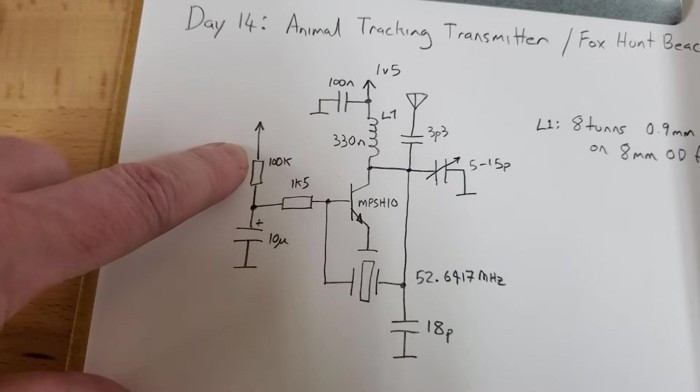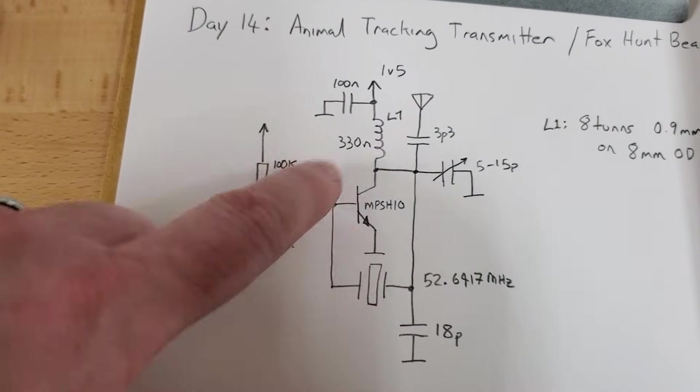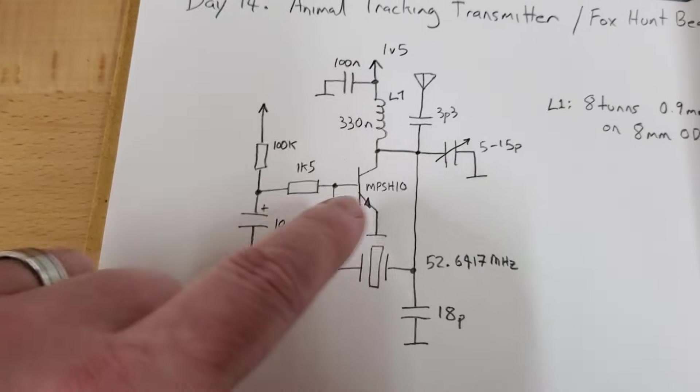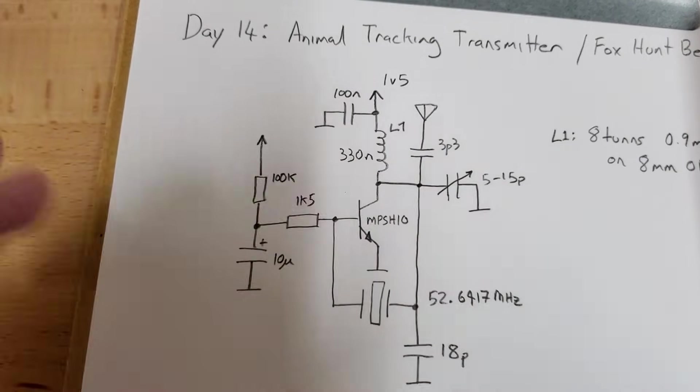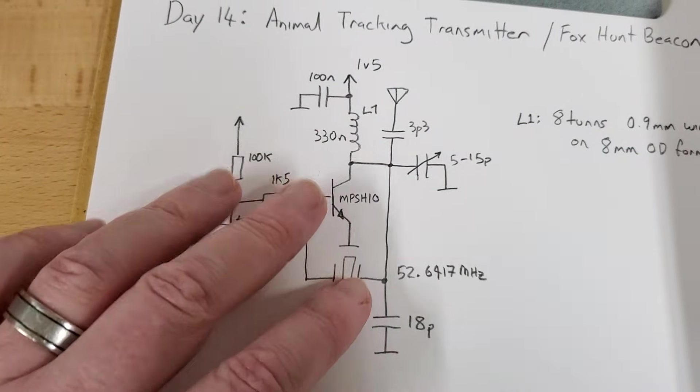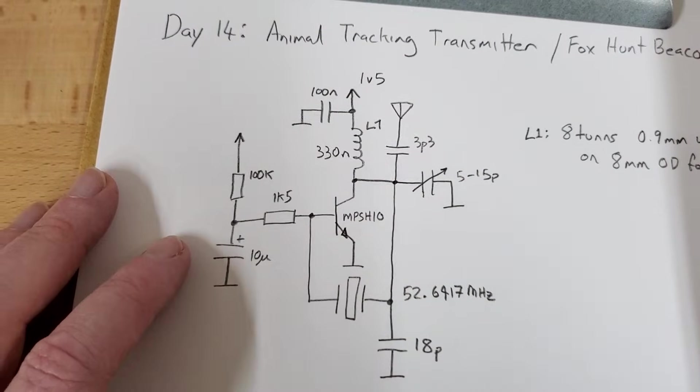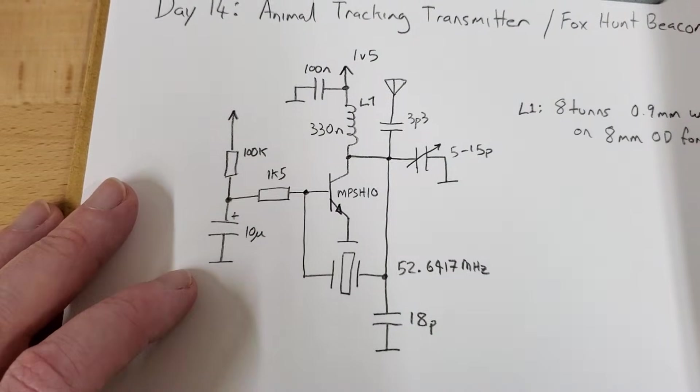A fairly high resistor here. This capacitor charges up until this guy turns on. I mean, it's always a little bit on, but it turns on enough that you have enough transconductance that the thing will oscillate. It's a conventional pierce oscillator in that mode, or an overtone oscillator depending on how you select these components.